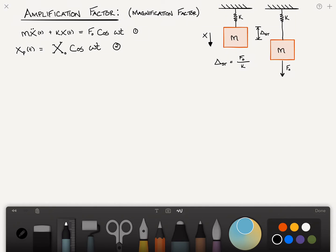And then taking the second derivative of equation 2 with respect to time, we get x double dot, the acceleration, sub p of t is equal to minus omega squared times capital x sub zero, cosine of omega t. So we call that equation 3.